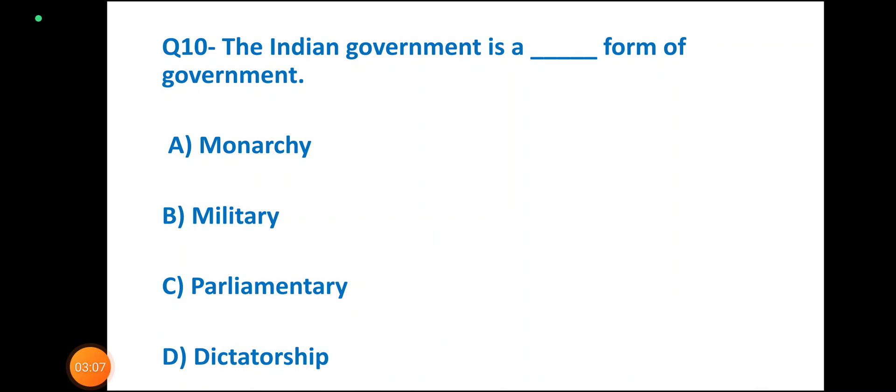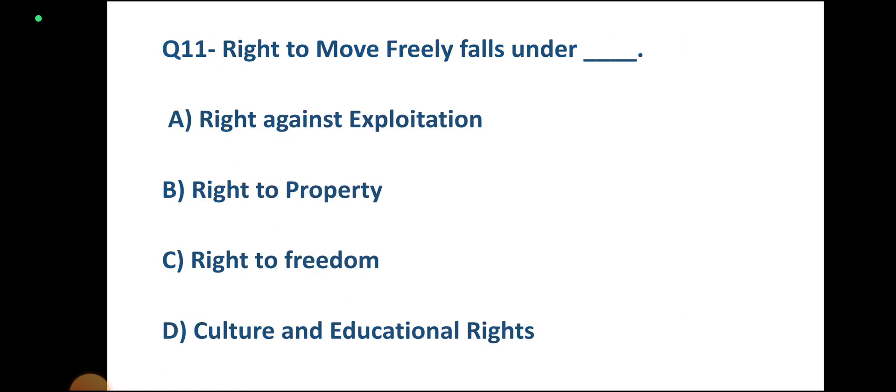Question number 10. The Indian government is what form of government? Options: Monarchy, Military, Parliamentary, Dictatorship. Correct answer: Parliamentary. Question number 11. Right to move freely falls under which right? Options: Right Against Exploitation, Right to Property, Right to Freedom, Cultural and Educational Rights. Correct answer: Right to Freedom.